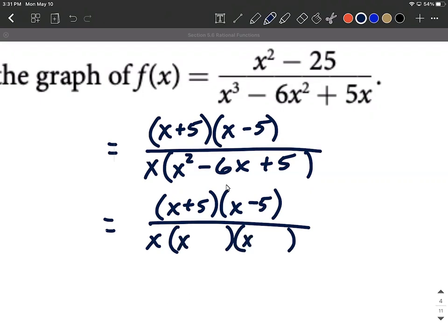I know it has to be x and x to make the x squared. For a 5, it has to be 1 and 5. And when I combine these together, I want it to make a negative 6. So I'm going to make them both negative. So x minus 1 and x minus 5.